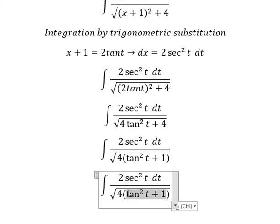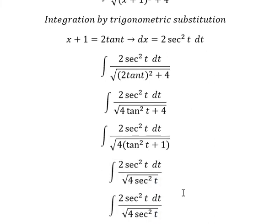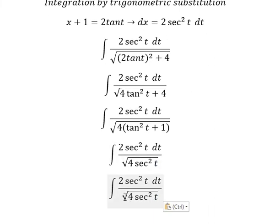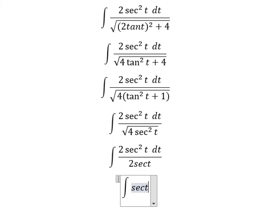This one, we change to sec² t. The square root of 4 sec² t, we change to 2 sec t. We simplify and we have sec t dt.